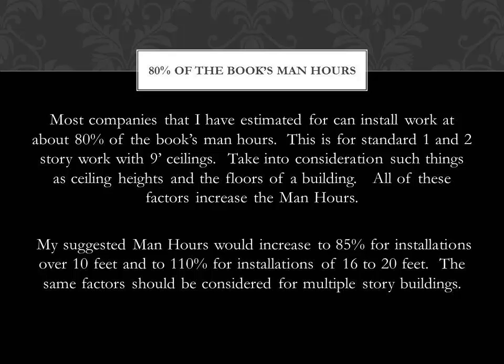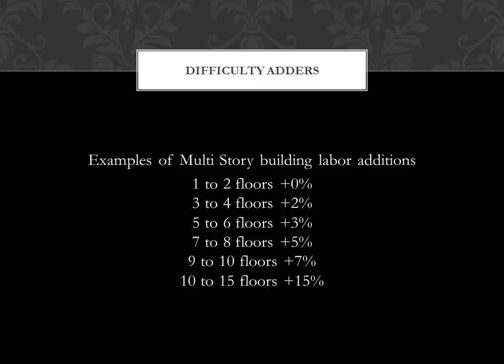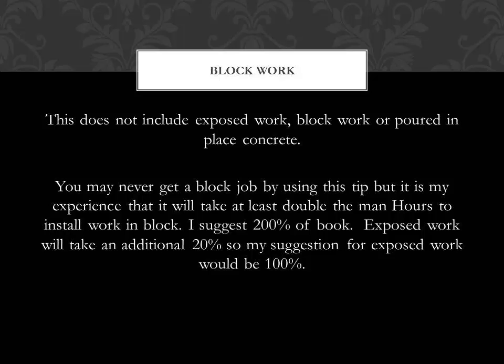The same factors should be considered for multiple story buildings. On this slide, I've provided some examples of multi-story building labour additions. One to two floors is a standard estimate — no percentage needs to be added. All the way up to 10 to 15 floors where you could add, as a suggestion, 15%. Block work: this does not include exposed work, block work, or poured-in-place concrete. It is my experience that it will take at least double the man hours to install work in block — I suggest 200% of book. Exposed work will take an additional 20%, so my suggestion for exposed work would be 100%.